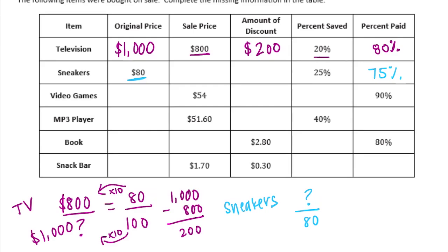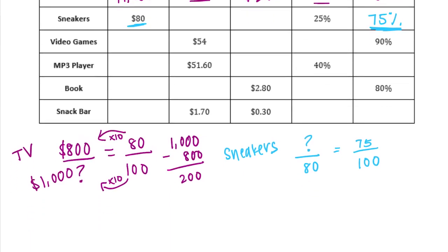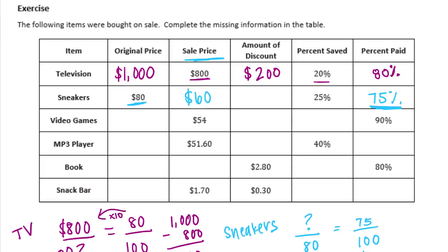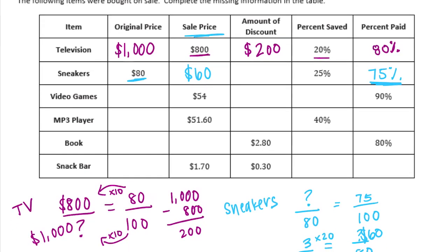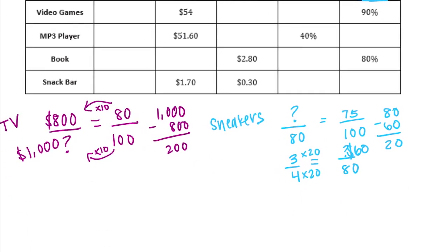Since we want to know how much we paid, we use the percent paid to find the sale price. 75% equals 3/4, so 3/4 is equal to what out of 80. Since 4 times 20 is 80, then 3 times 20 is 60. The sale price of the sneakers is $60, and the discount — the difference between $80 and $60 — is $20.